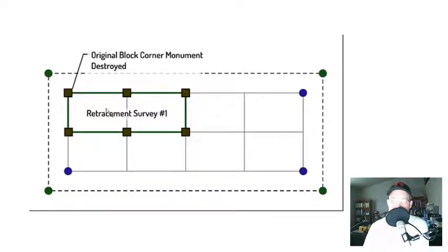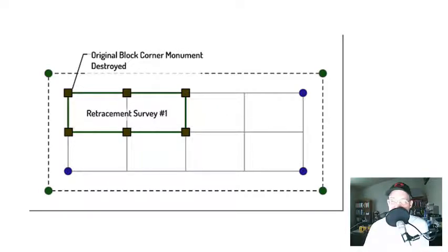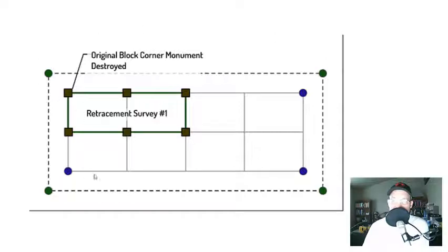Somebody hires a surveyor to perform a retracement survey on lots one and two. When he comes out to do the survey, he finds that one block corner monument has been destroyed — somebody put in a block wall and destroyed it. The other seven original monuments were found. He does some calculations, calculates the corner positions, and sets a monument at each corner.